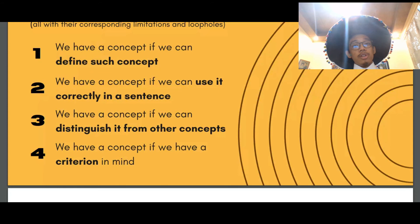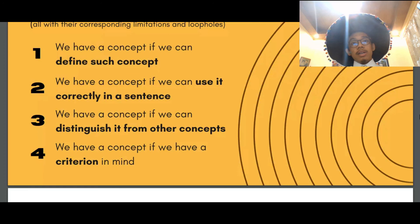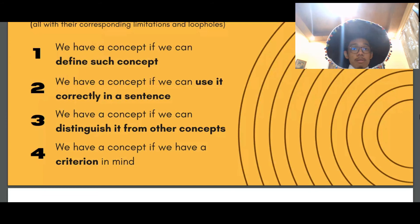For our fourth and final definition, Hospers described that we have a concept if we have a criterion in mind. And although Hospers described this definition or meaning as very independent, as all it requires is a mental state or cognition of what the criterion in mind has to be,